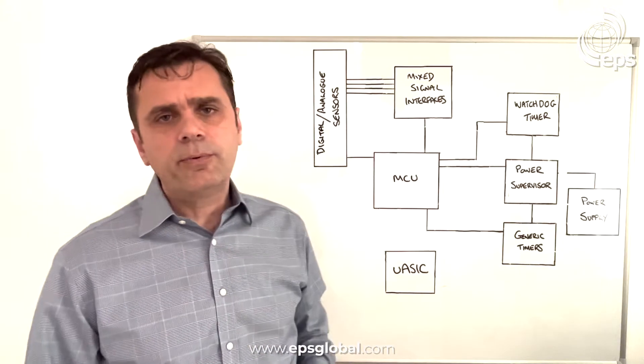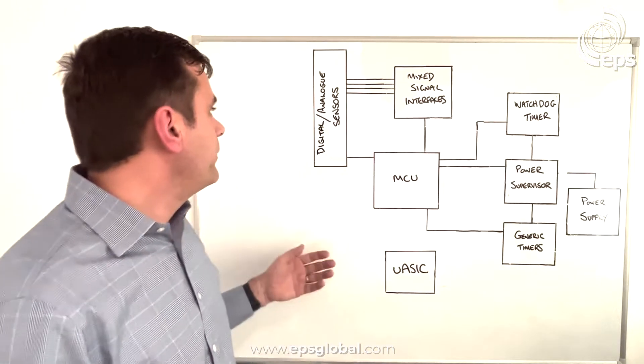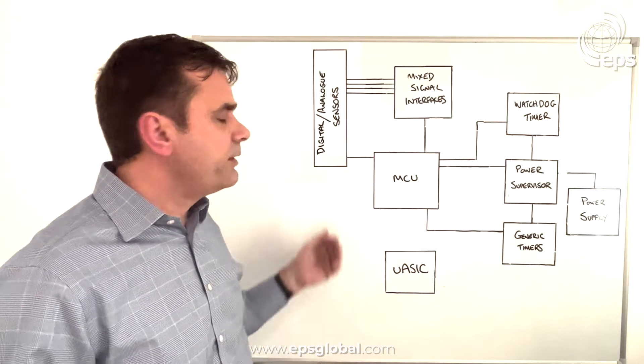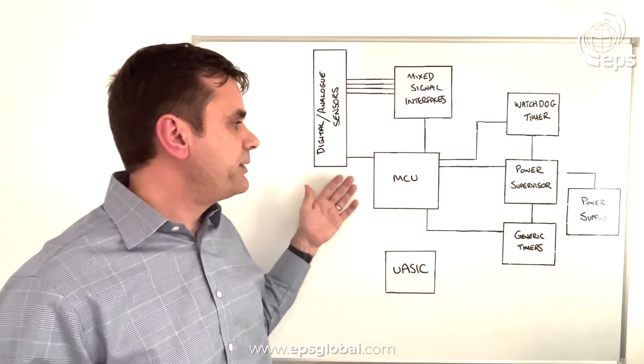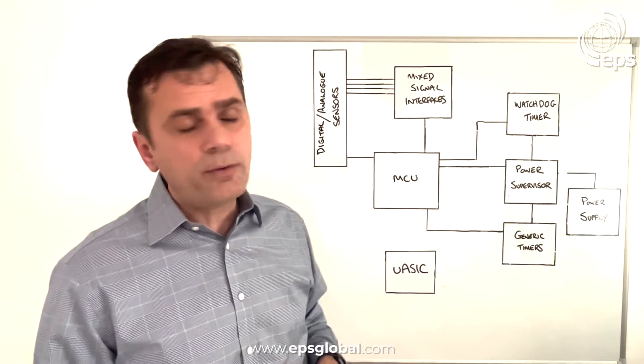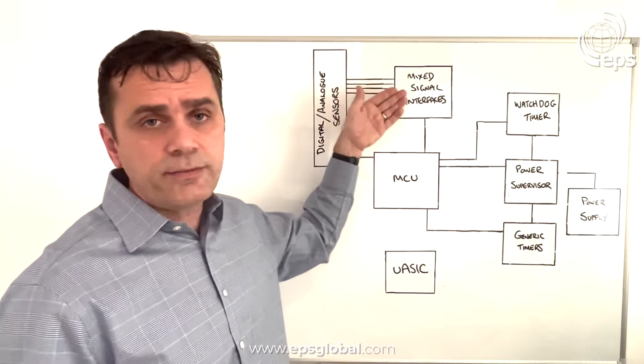Take this example I have on the whiteboard here where you've got lots of digital analog sensors, you've got an MCU doing the main processing functions, you've got a power supply and then you've got board support functions like mixed signal interfaces.